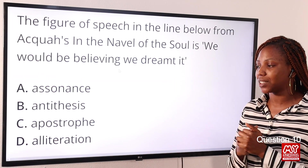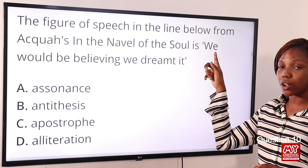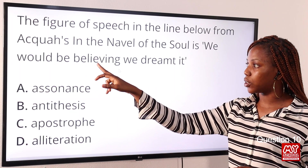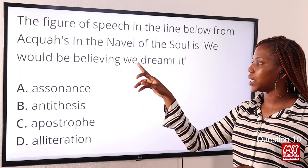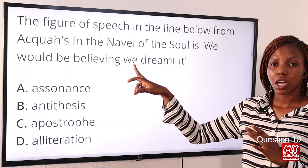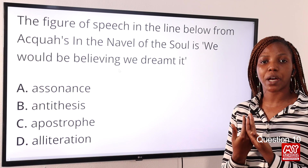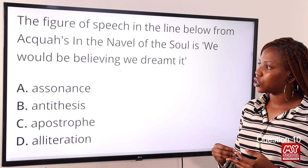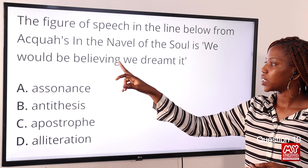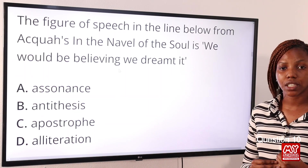The controversy here is between assonance and alliteration. In 'we would be believing we dreamt it,' we see the long 'e' sound in 'we,' in 'be,' in the second syllable of 'believing,' and again in 'we' — four times. The short 'e' sound appears in 'be,' in the syllable '-liev-,' and in 'it' — three times. Assonance concerns vowel sounds in any syllable.